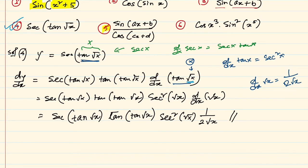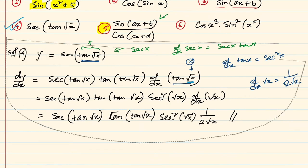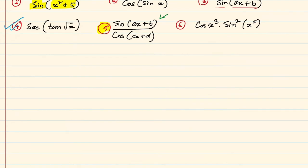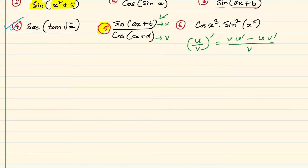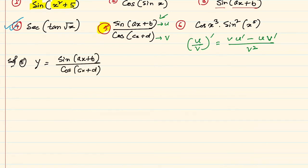Now question number 5: y = sin(ax + b)/cos(cx + d). Here we consider the numerator as u and denominator as v. We know the derivative of u/v is (v·u' − u·v')/v². We will use this quotient rule. Assume u = sin(ax + b) and v = cos(cx + d), and its derivative is given by v·cos(cx + d) times the derivative of u.